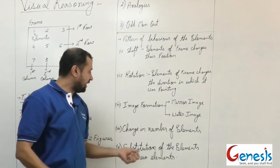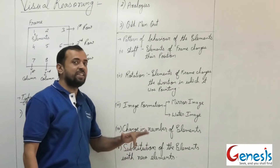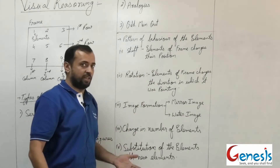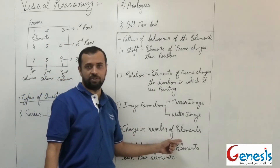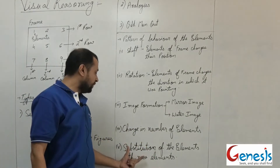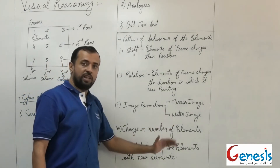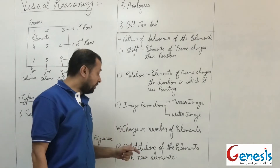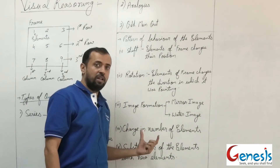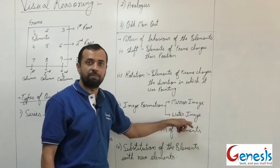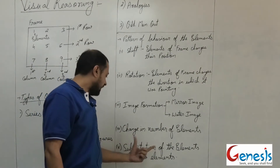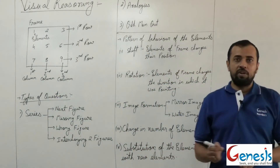The fourth behavioral pattern is change in the number of elements, which is easier to decode. If from frame 1 to frame 2 to frame 3 the density of elements is increasing or decreasing, you decode the logic of how the count is changing. The fifth type is substitution of elements — all frames in a series may contain different elements, and you find the logic: for example, one element disappears and two new elements appear, then two disappear and four new ones appear.